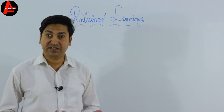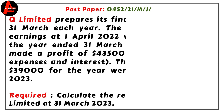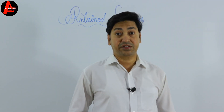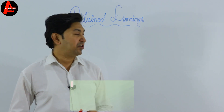Today we will take a question from the 2023 IGCSE Accounting Plus paper. Q Limited prepares its financial statements to 31st March each year. The company's retained earnings at 1st April 2022 were $16,250. During the year ended 31st March 2023, the company made a profit of $43,500 after charging all expenses and interest. The total dividends of $39,000 for the year were paid by 31st March 2023.